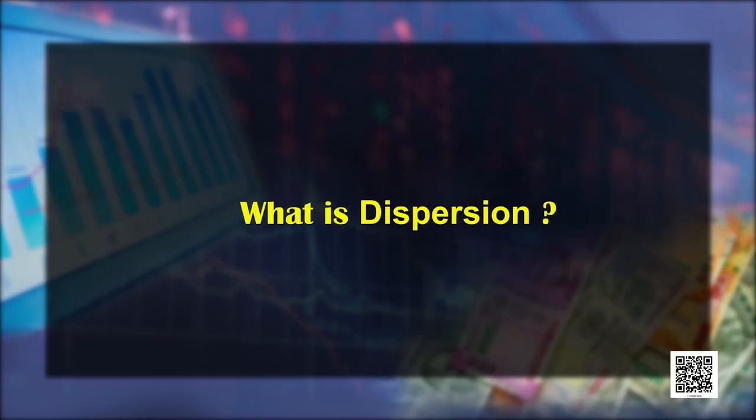Hello students, this is your economics coach Pratik Vaseen, starting a new chapter today. We will be discussing Chapter 6 from your book Statistics for Class 11th. Today's chapter is measures of dispersion. Dispersion actually measures the distribution of a series from a central value, may it be mean, median, etc. In this video we will be discussing four measures of dispersion: range, quartile deviation, standard deviation, and mean deviation.